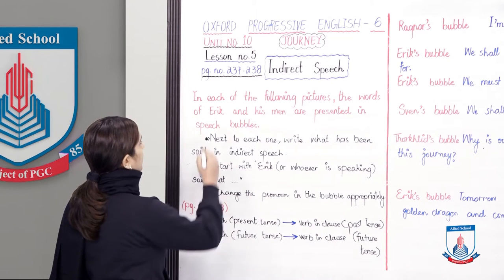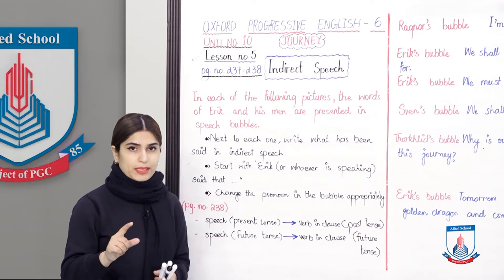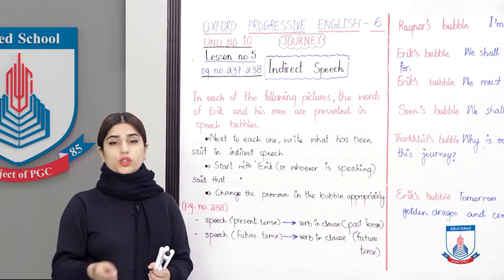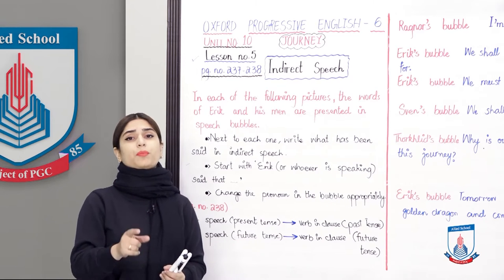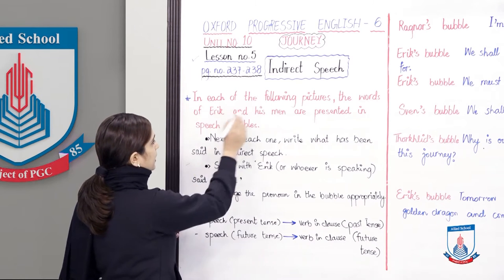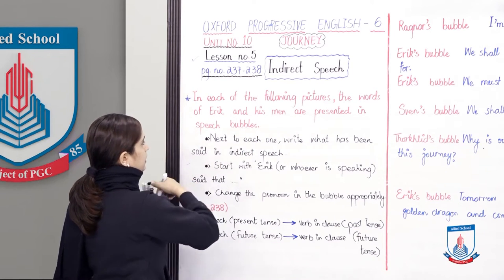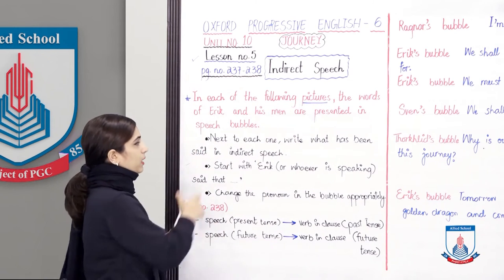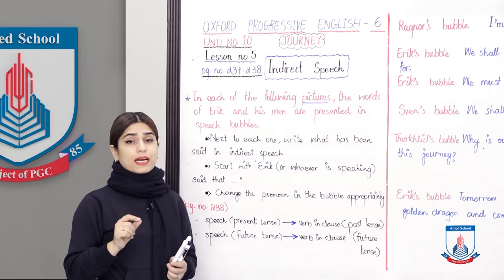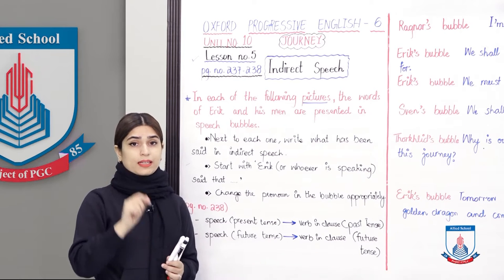Today's lesson will start here. I have done Lesson number 5, Page number 237 and 238. This little topic is given which we have to do. Besides that, there are extra exercises which we have not done — we will skip some work and do just the important work. Let's read the instructions: in each of the following pictures, the words of Eric and his men are presented in speech bubbles. In each picture in your book, you can see those pictures. With each picture, you will look at a speech bubble and underneath you will look at a box.